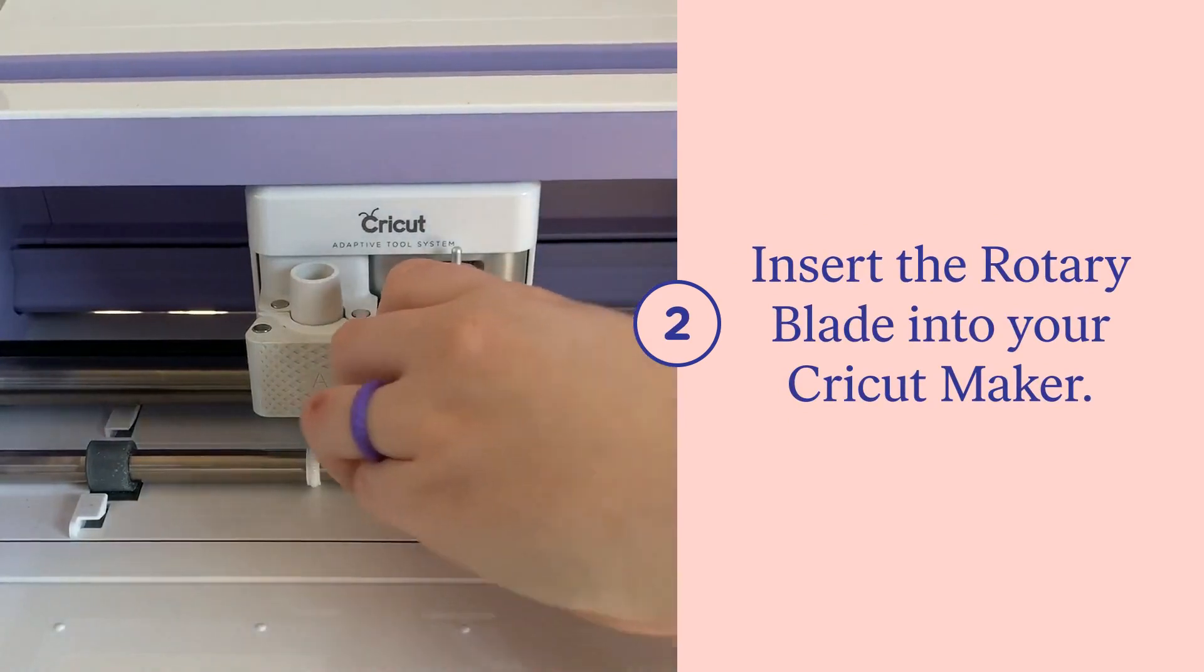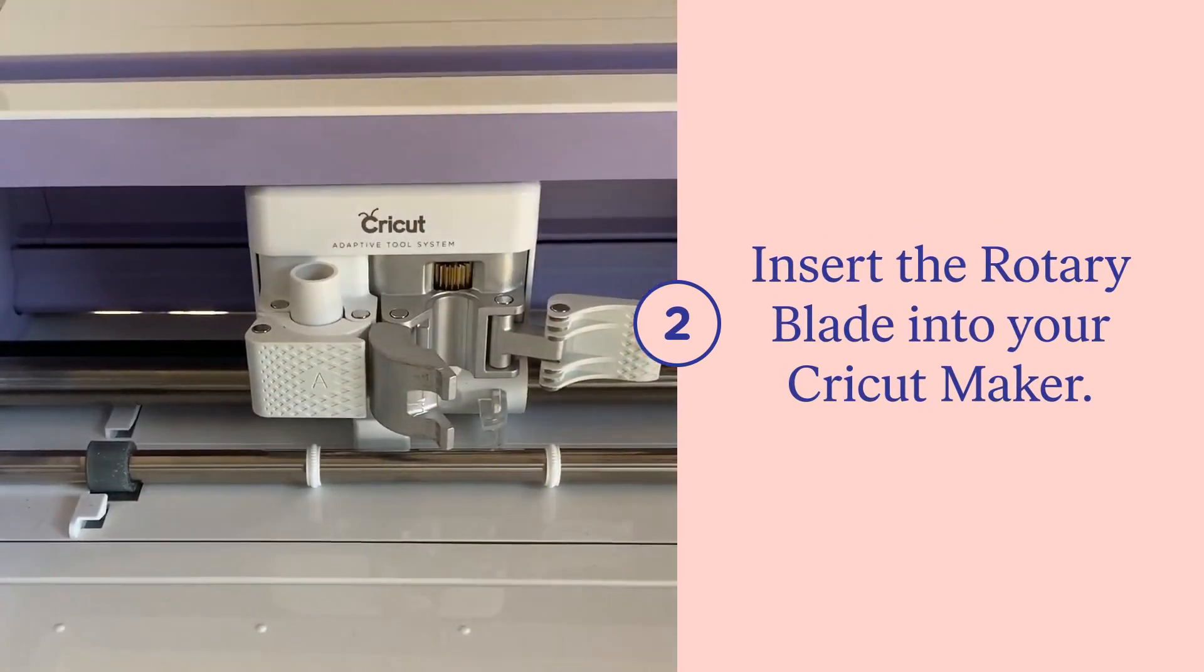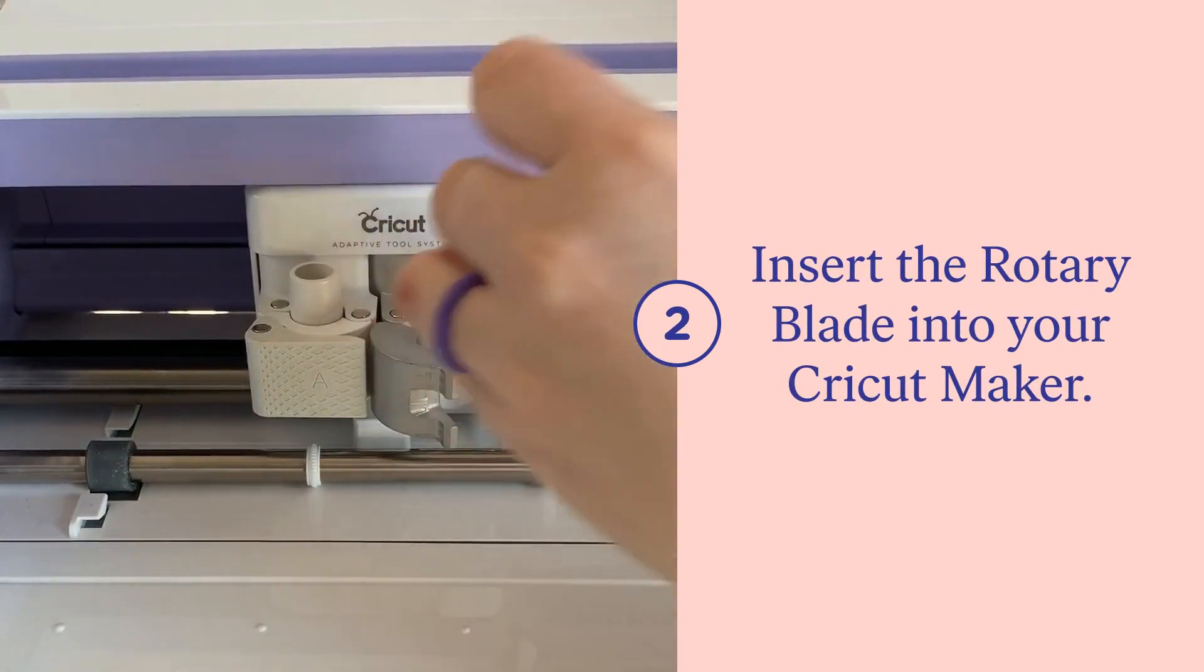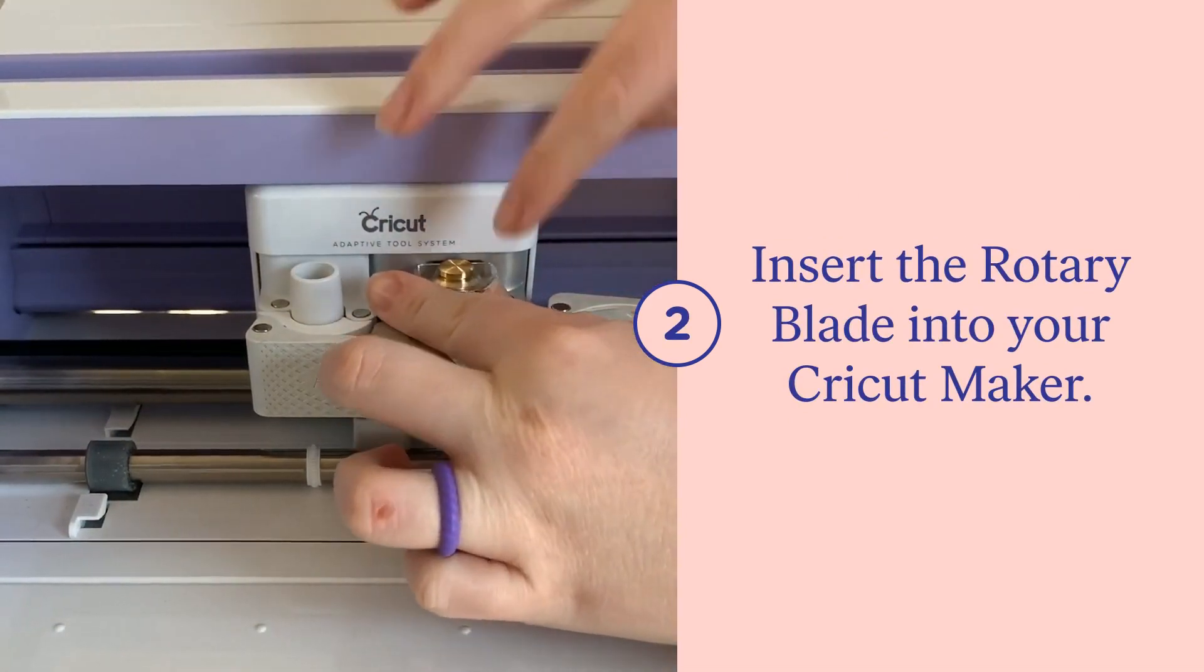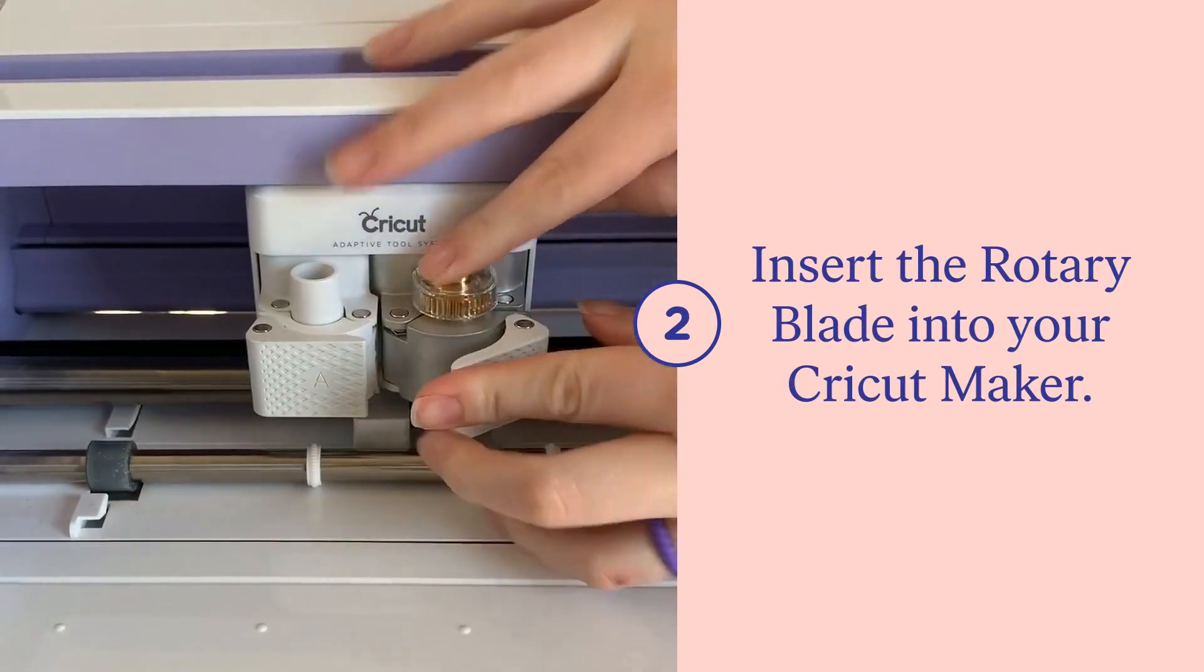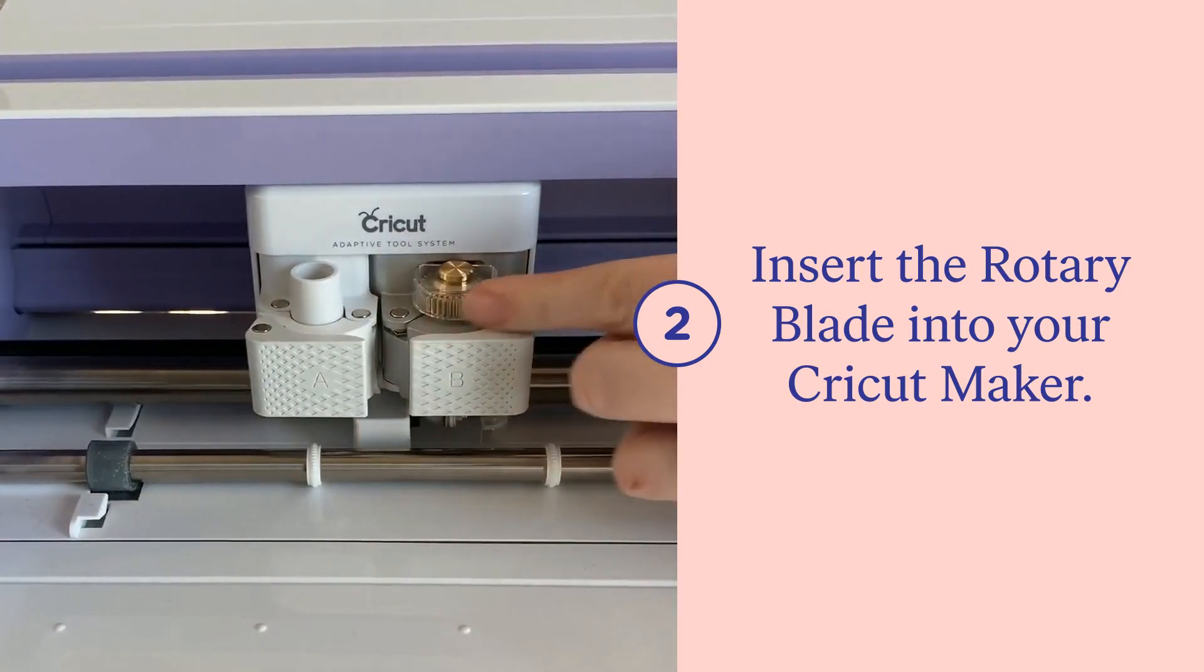Next, you need to insert your rotary blade. Start by removing your fine point blade. Then when you get your rotary blade, make sure the open gears are facing the machine and the plastic covered gears are facing you. Then lock it into slot B.